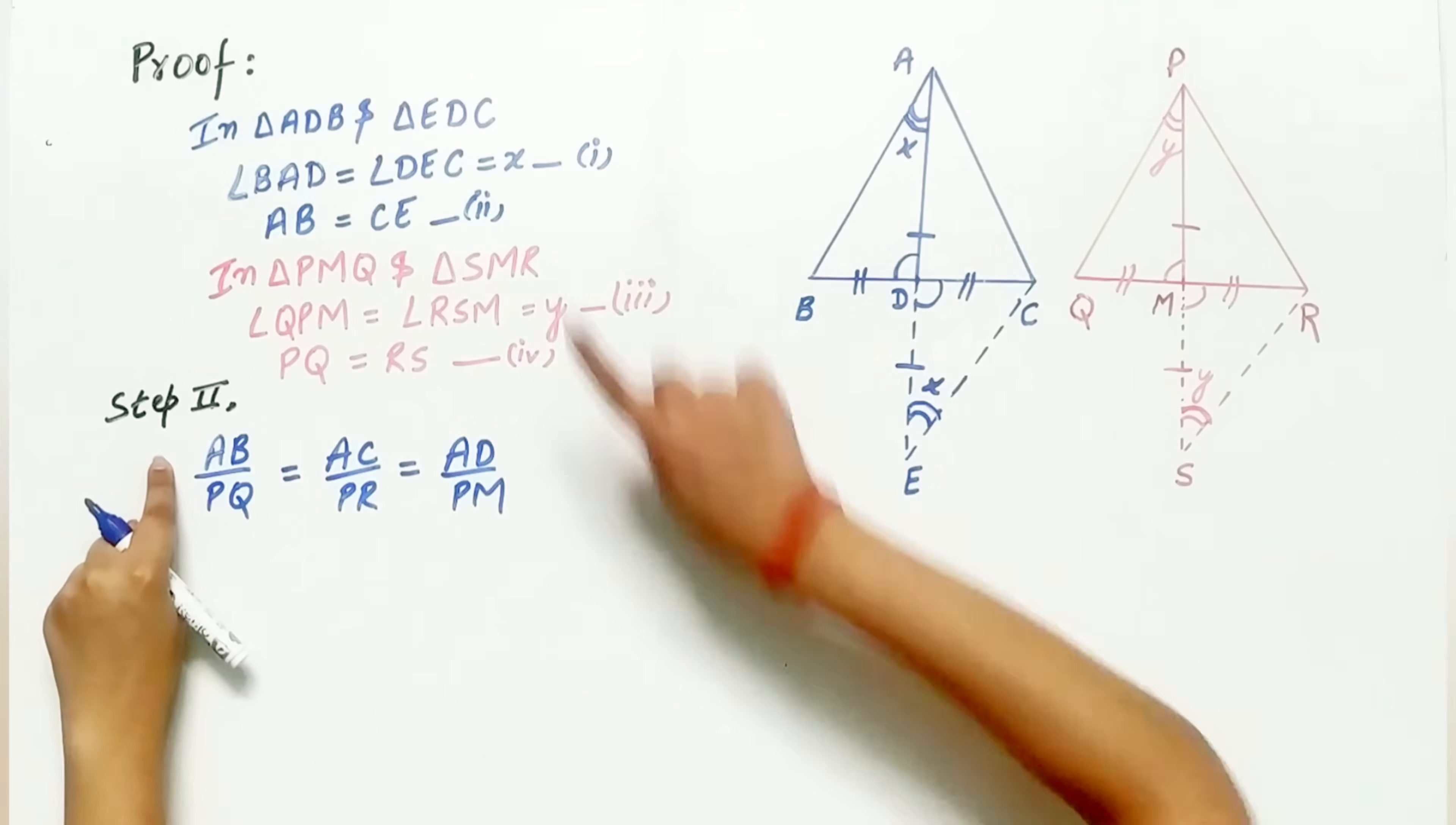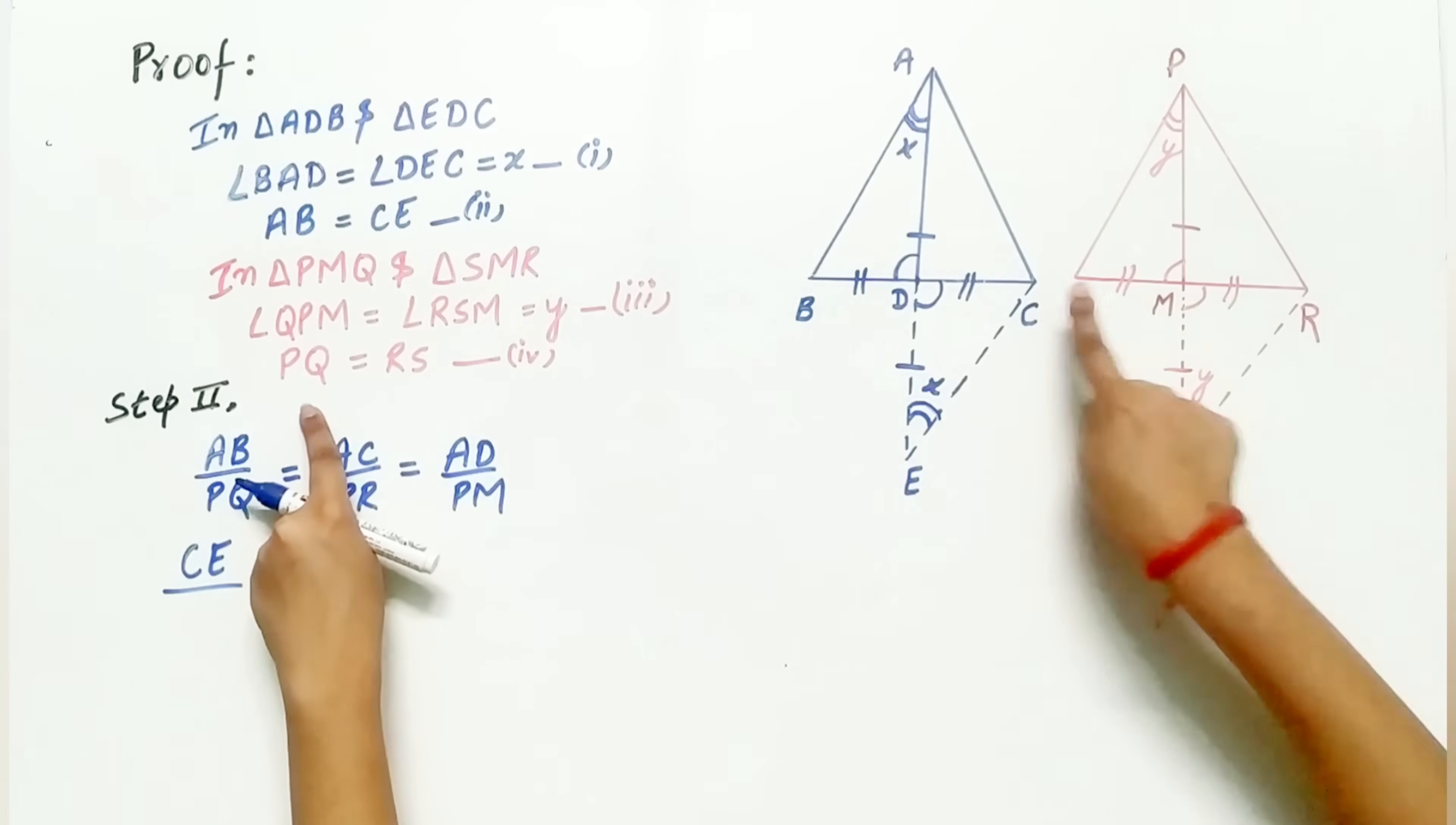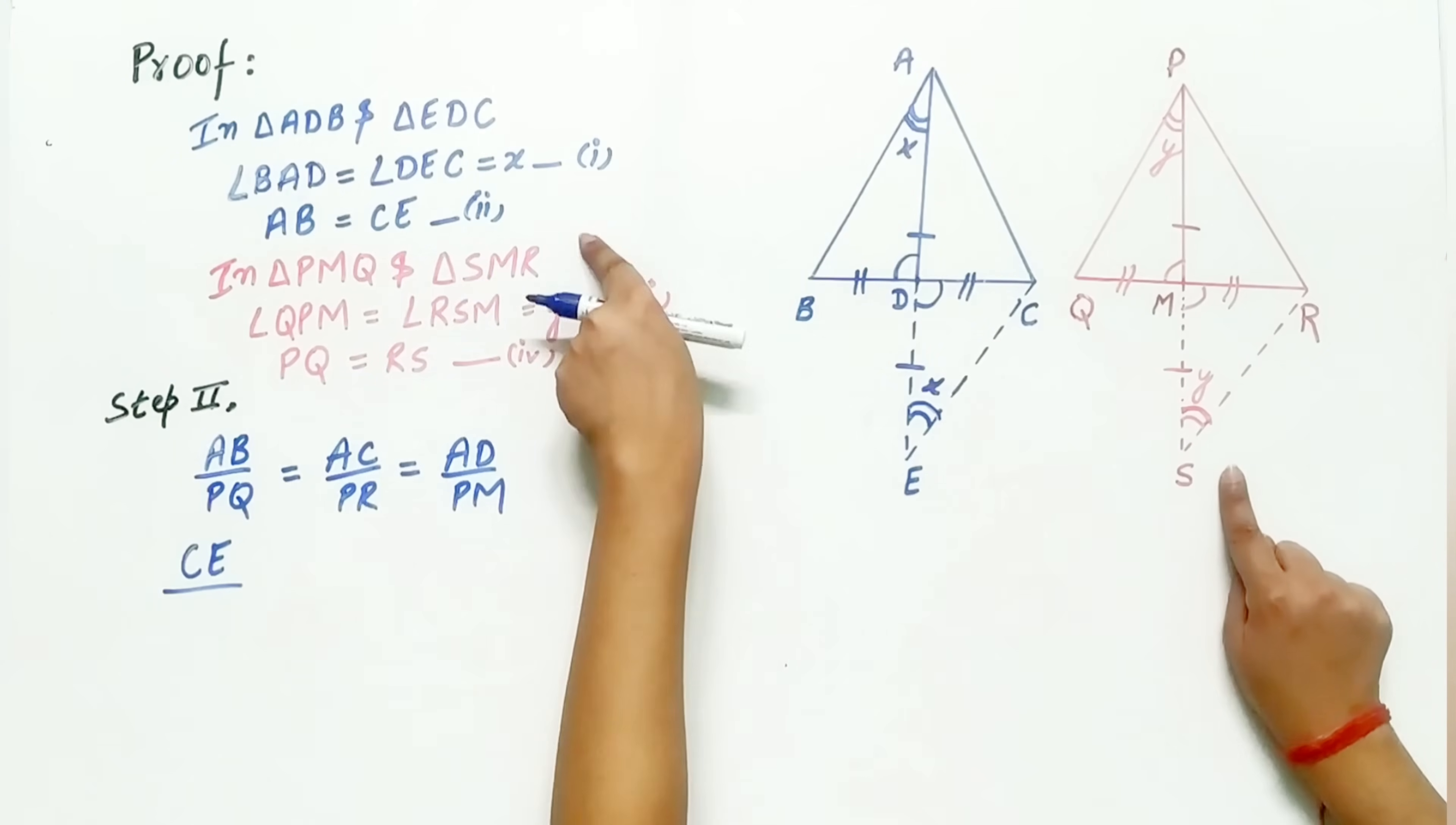Now, AB is equal to CE. We have already proved it. So, substitute CE in place of AB. Similarly, PQ is equal to RS. We have already proved it. So, substitute RS in place of PQ.